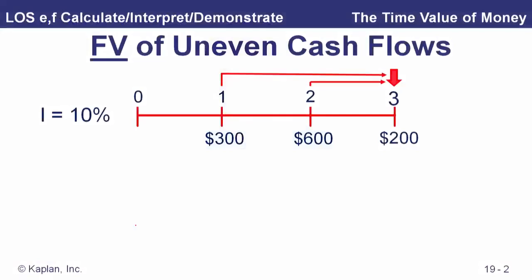Now let's look at some uneven cash flows — not an annuity, but payments that have different values. We're going to calculate the future value of three payments, or deposits into an account, of $300, $600, and $200. How much are we going to have in the account at time three if we're earning interest at a rate of 10% compounded annually?